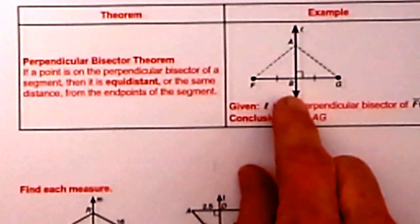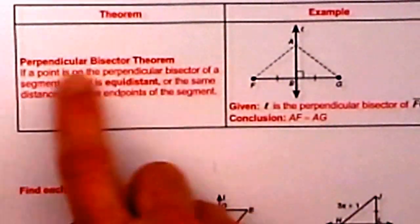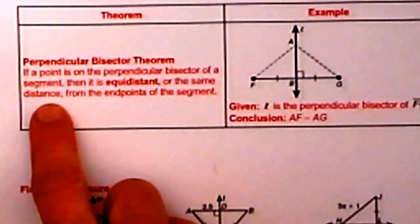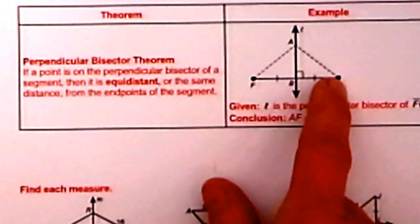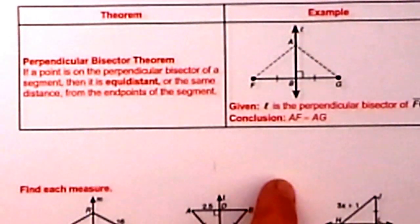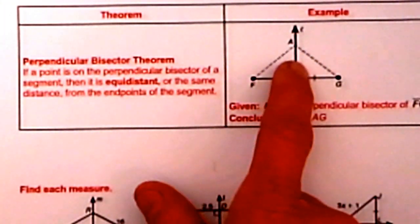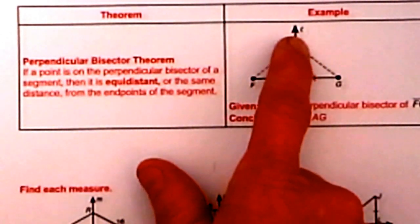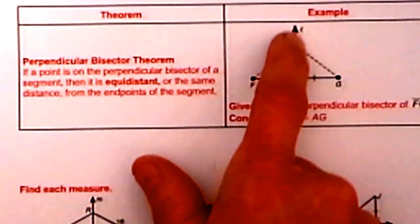So in this case B is our midpoint. So if a point is on a perpendicular bisector of a segment, then it is equidistant — that means the same distance — from the endpoints of this segment. So we have GF as our segment, and AB which is a perpendicular bisector. That means every single point that falls on this line is equidistant from F and G. So point A up here is the same distance from F as it is from G, because it falls on the perpendicular bisector.